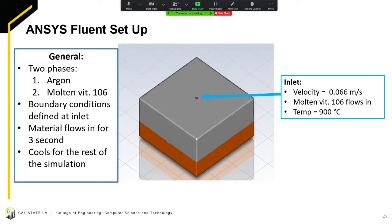The system is placed in an enclosed environment, therefore argon gas was set as the default fluid in the simulation. The outlet of the crucible, which is the inlet of the simulation, is placed 20 millimeters above the plate. The molten BMG was set to flow at 0.66 meters per second at a temperature of 900 degrees Celsius. The molten BMG was set to flow onto the mold for 3 seconds, and the simulation continued for another 17 seconds to let the BMG cool down.